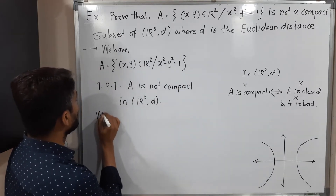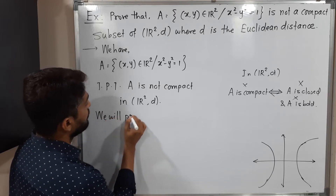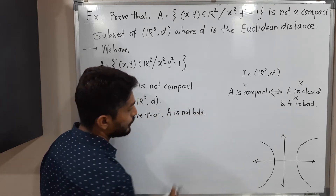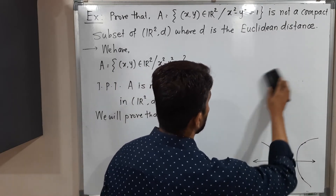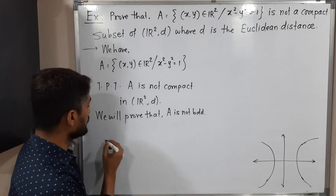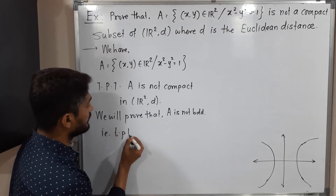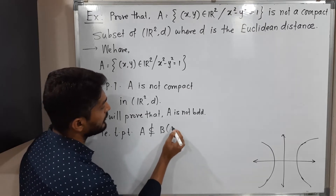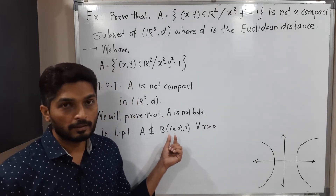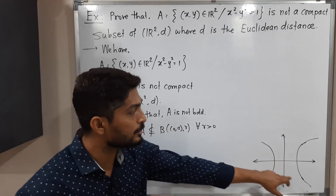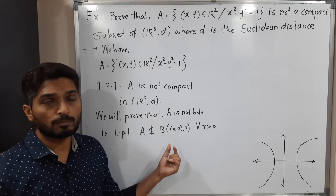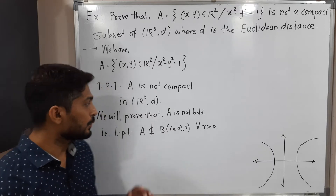We will prove that A is not bounded. That means what we have to prove exactly: we have to prove the set is not bounded, which means we have to prove that A is not a subset of B(0,0,R) for all R greater than 0. This represents an open ball with center (0,0) and radius R. So for every R greater than 0, if A is not a subset of such a ball, then we say the set is not bounded. This is what we have to prove.